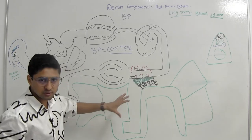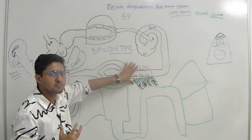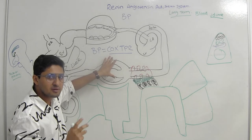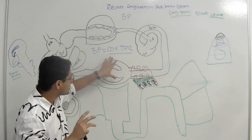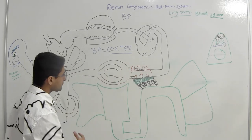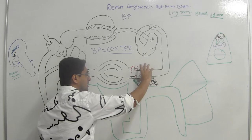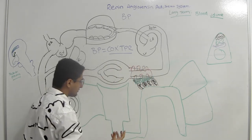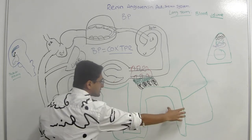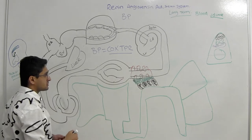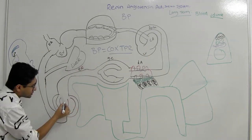The kidney has baroreceptors and each nephron has baroreceptors — there are about 2.4 million nephrons in the body. Within the kidney, one nephron has a proximal convoluted tubule, loop of Henle, distal convoluted tubule, and collecting duct. The afferent arterioles lead into glomerular capillaries, then efferent arterioles, and then peritubular capillaries.